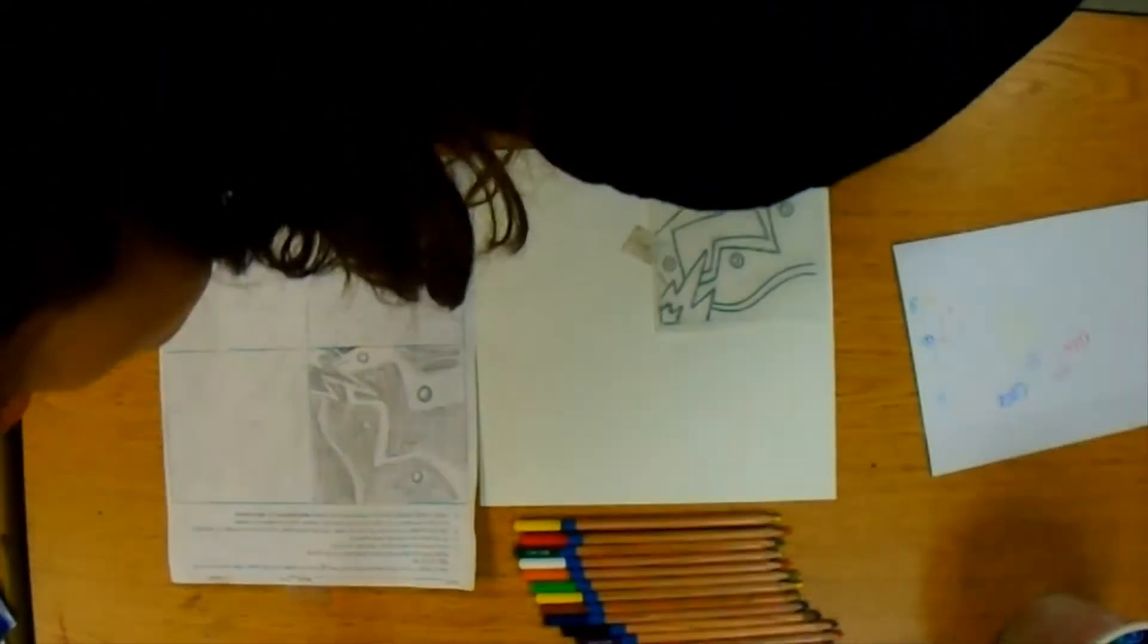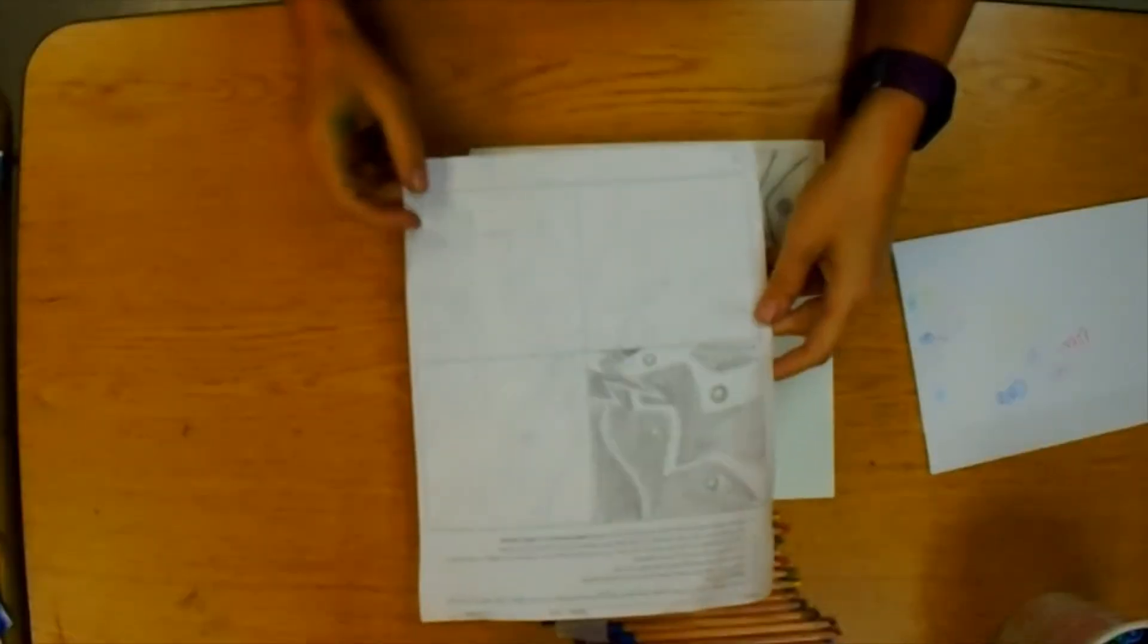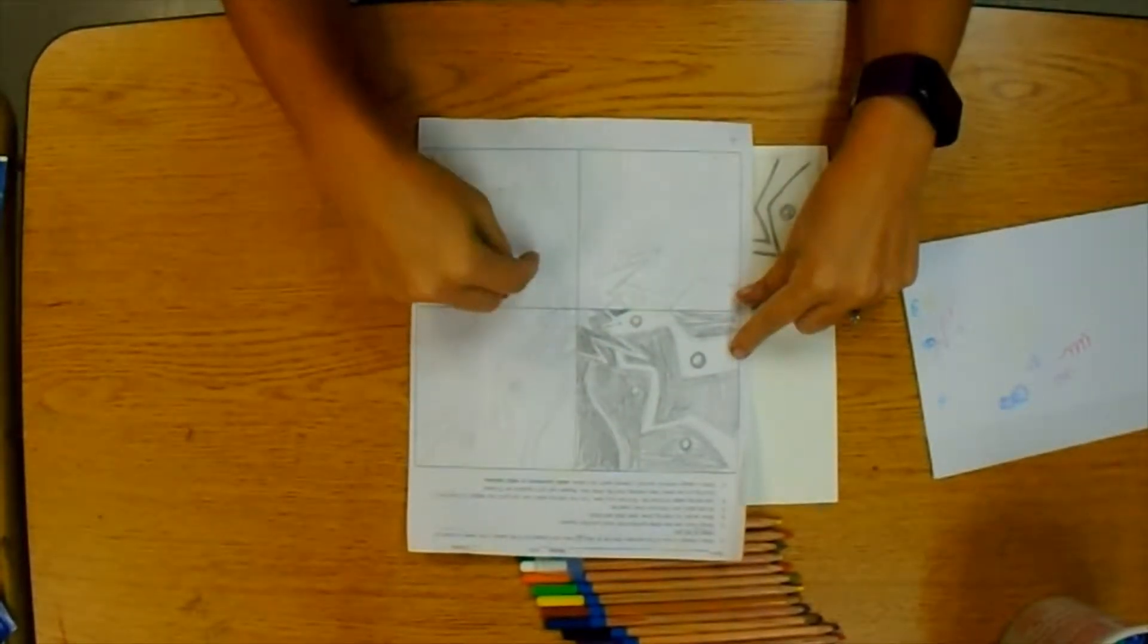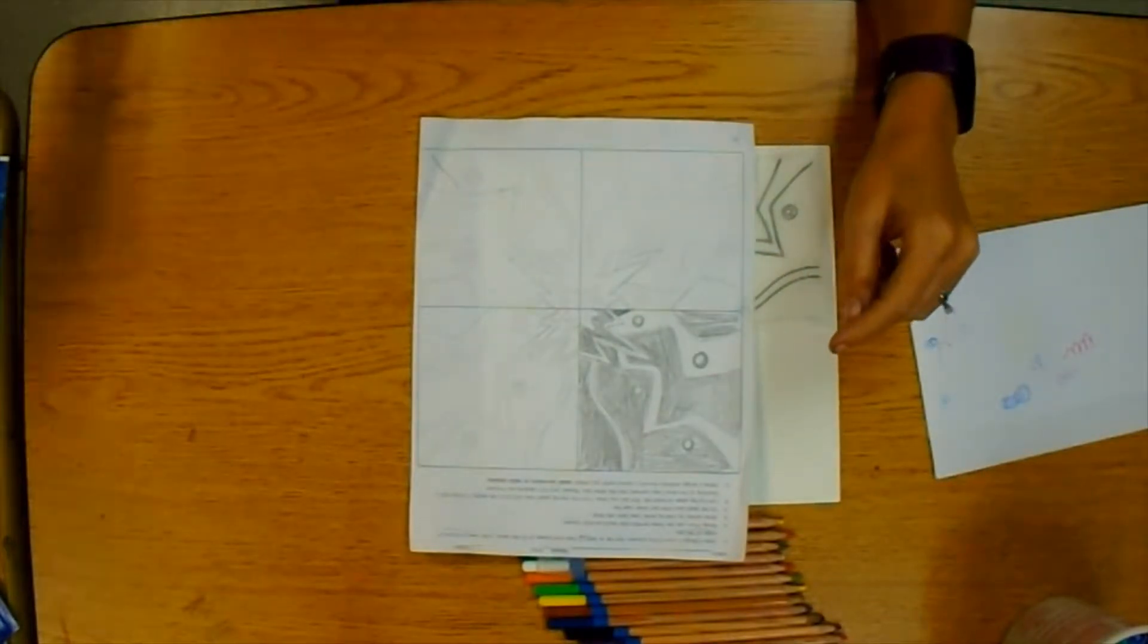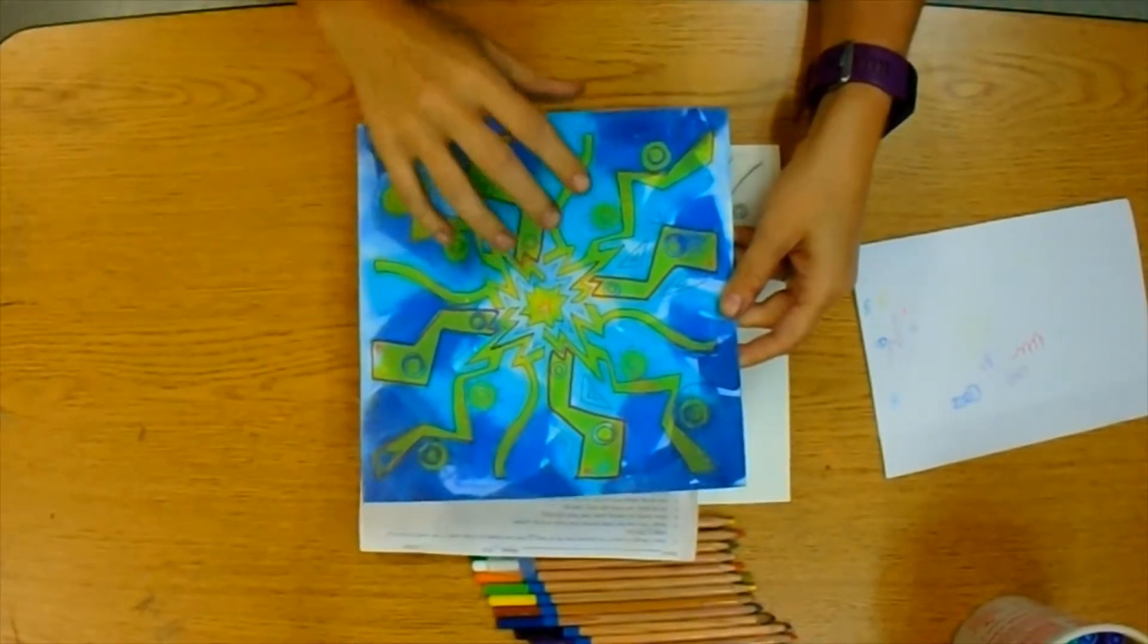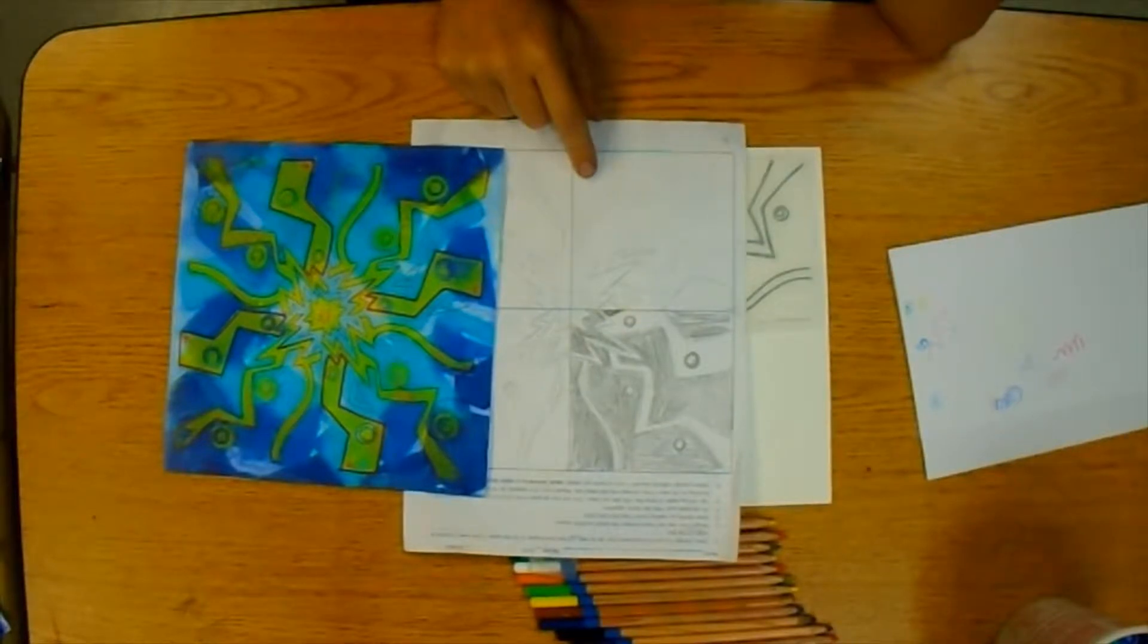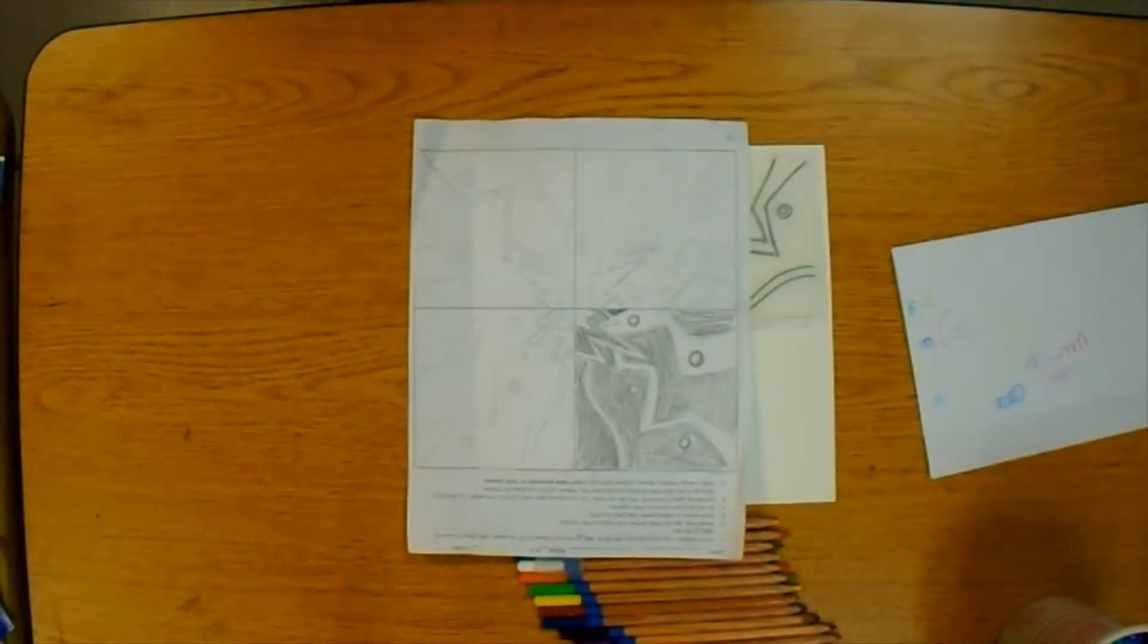We're going to do one last project with this design that you created for your stamp. When we made this design, we made it reflect or be symmetrical. Then when we did our stamps, we had to end up rotating the stamp, so this design didn't come out as specific as we designed it as a pencil drawing. Now we're actually going to use this design for one more project that's going to become a painting.